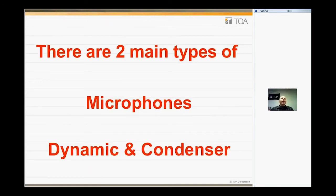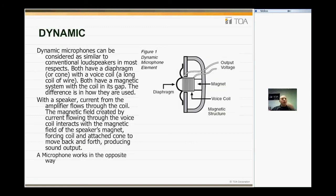There are two main types of microphones: dynamic microphones as well as condenser microphones. Dynamic microphones can be considered similar to conventional loudspeakers in most respects. Both have a diaphragm or cone with a voice coil — a long coil of wire that goes around that voice coil. Both have a magnetic system with this coil and its gap.